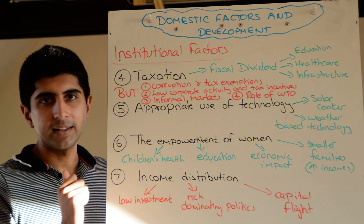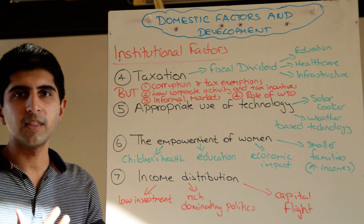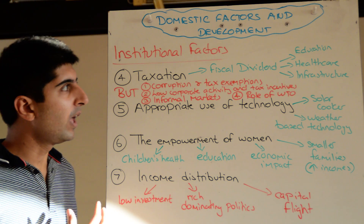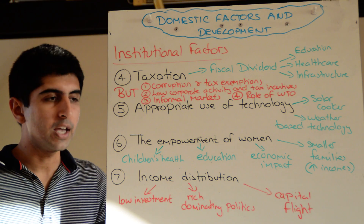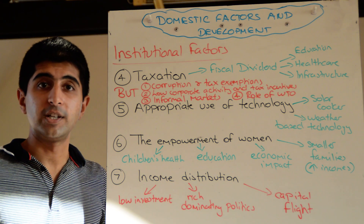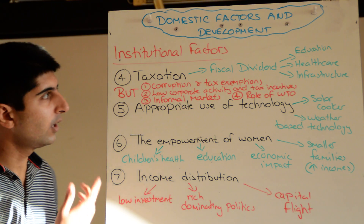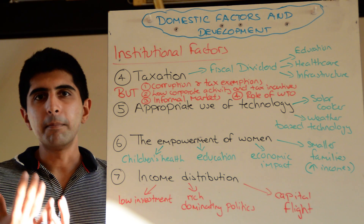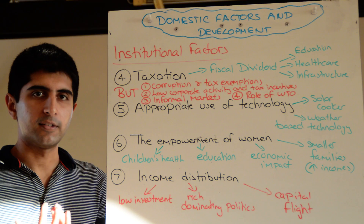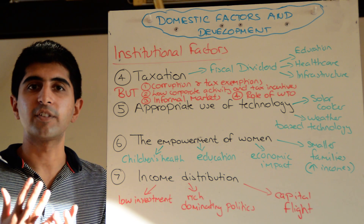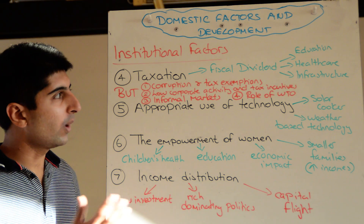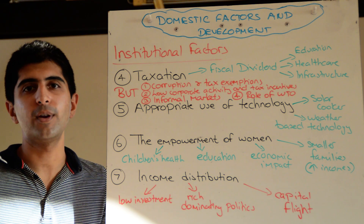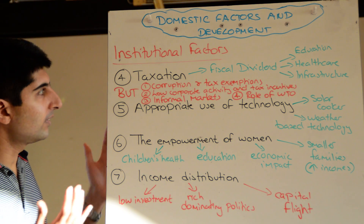Let's start by looking at taxation. We called the benefits of tax revenues a fiscal dividend in the previous video — when the government gains higher tax revenues it can use that money to spend on education, health, and infrastructure. However, there are major barriers to efficient use of government tax revenue, and whether that revenue will actually promote development or be generated in the first place.